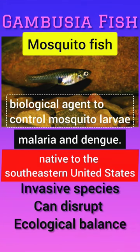The fish is native to the southeastern United States, particularly the Mississippi River. Outside the given region, it acts as an invasive species, which creates a threat among ecological experts that it will disrupt the given ecosystem's ecological balance.